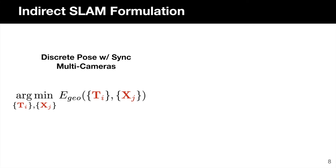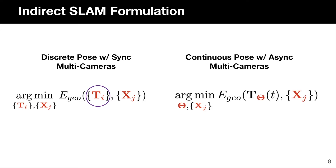To optimize pose parameters, let's first take a look at how existing synchronous multi-view SLAM systems perform trajectory estimation. In synchronous multi-view systems, the robot trajectory is usually expressed as a set of discrete poses at the camera capture times. In a feature-based indirect SLAM formulation, the goal is to find the set of discrete poses and map points that best minimize the reprojection error. In asynchronous multi-view SLAM, we express the trajectory as a continuous-time motion model with pose parameters, and we replace the discrete pose terms with continuous pose representations, jointly optimizing for the pose parameters instead.